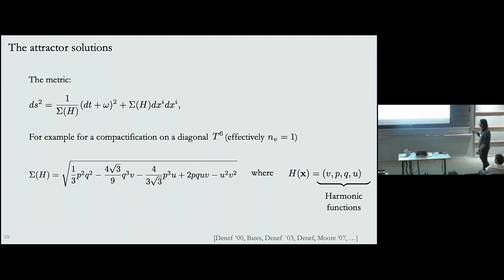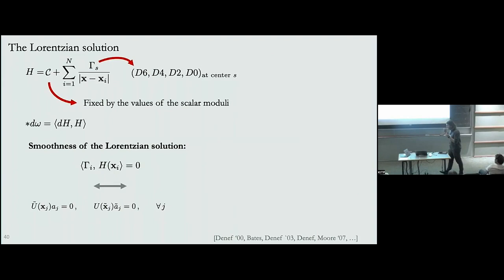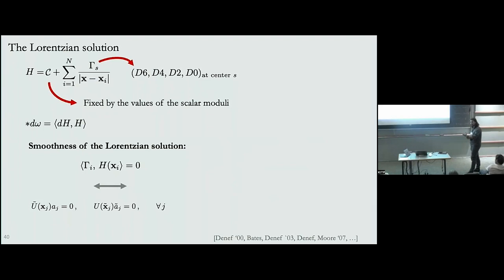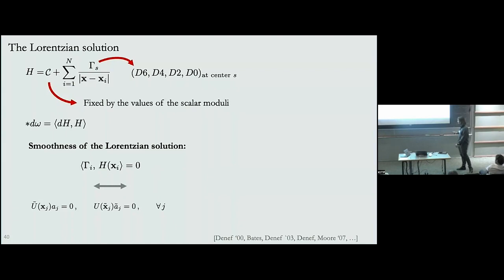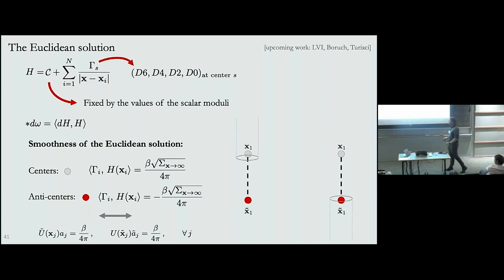We can again study the smoothness of these solutions in precisely the same way as before. We look at all points that are singular and impose no curvature blowups. In Lorentzian signature this results in a condition between the intersection product of the charges and harmonic functions captured by the vector H — these are precisely the solutions that Denef and Moore studied, important for understanding the moduli spaces of supergravity. In Euclidean signature, we can do the same thing and split different poles into centers and anti-centers.